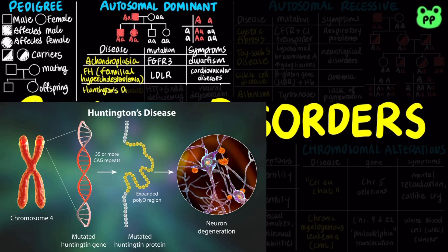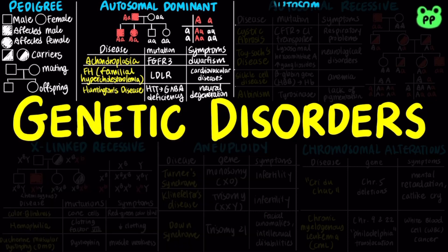Huntington's disease is caused by an autosomal dominant mutation in the HTT gene, which causes deficiency in the neurotransmitter GABA, leading to neurodegeneration. The disease has no obvious phenotypic effects until the individual is about 35 to 40 years of age.